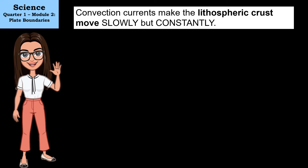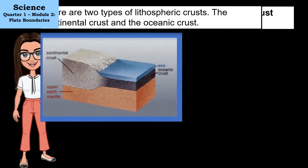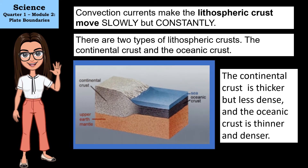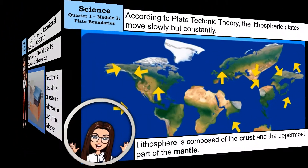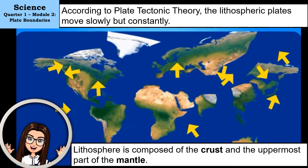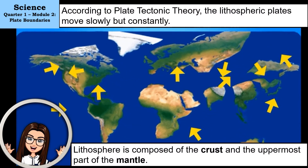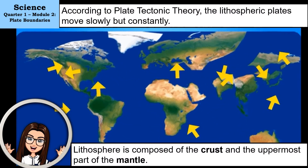There are two types of lithospheric crusts: the continental crust and the oceanic crust. The continental crust is thicker but less dense, and the oceanic crust is thinner and denser. According to plate tectonic theory, the lithospheric plates move slowly but constantly.